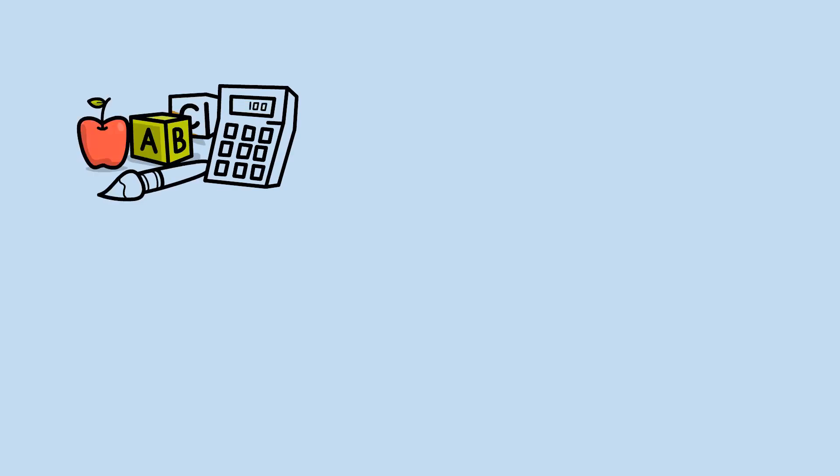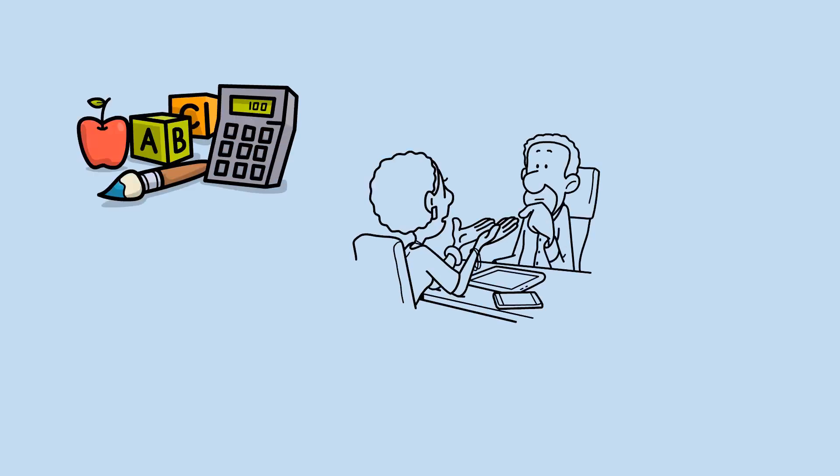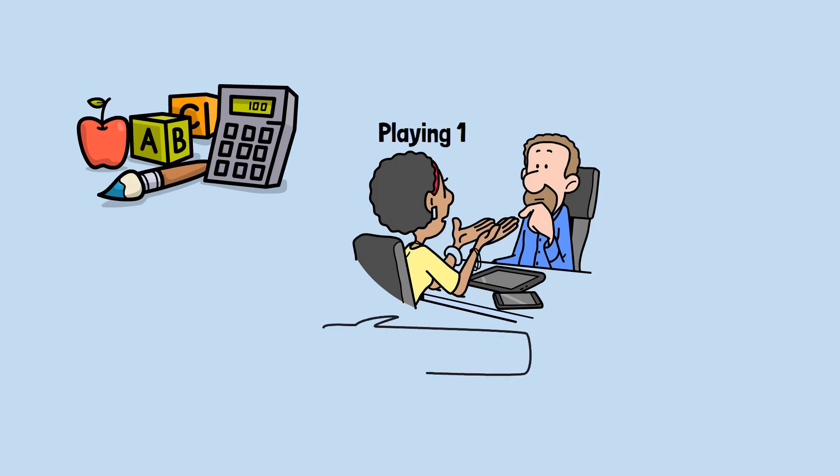While the basic strategy is mathematically foolproof, skilled players quickly learn to disguise their intentions. Playing 1, then always subtracting from 11, creates an obvious pattern that observant opponents might detect.